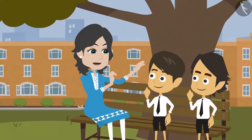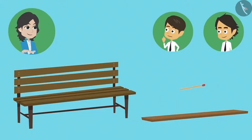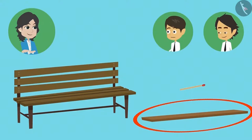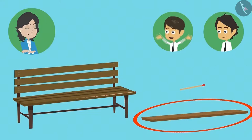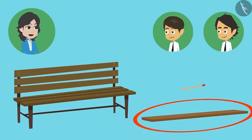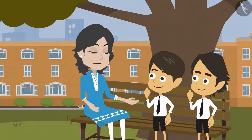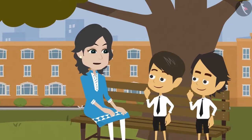Absolutely right. But why not just say 100 centimeters? Come, I will explain. If I ask you to measure the length of this seat, what will you measure it with — this small matchstick or this big stick? I will measure it with the big stick because with it I can measure quickly; I would have to use the matchstick several times. Exactly — measuring a long bench with the big stick is much easier and practical. In the same way, meter is used to measure long things and centimeter is used to measure small things.